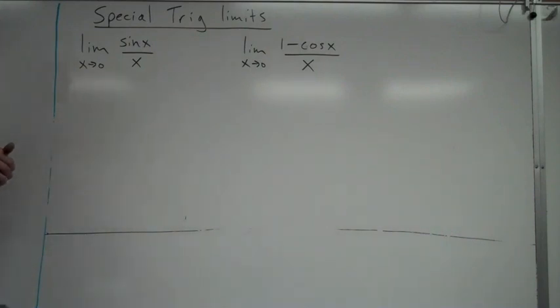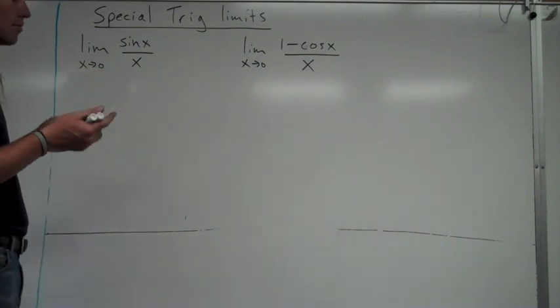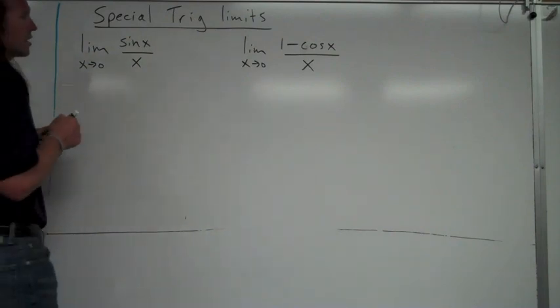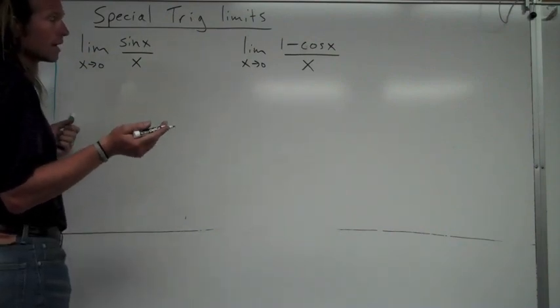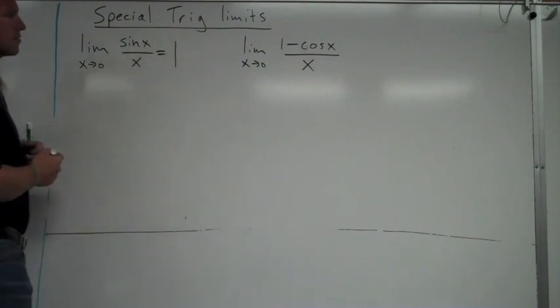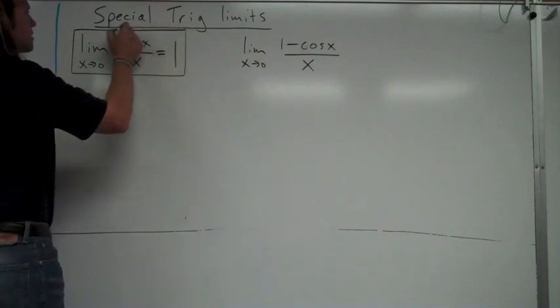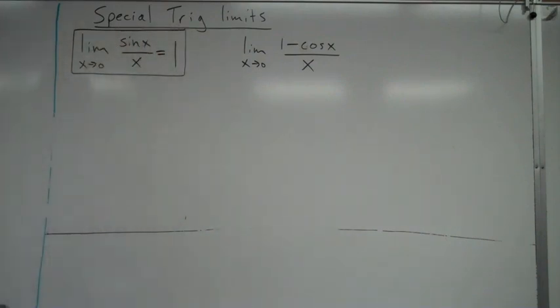And you can see what's going on here. And you can see that if you look at the graph, as x approaches zero, the y value is approaching one. So there actually is a hole in the graph there at x equals zero because you can't divide by zero, but you can tell that the limit is equal to one. So this right here is something that you are expected to commit to memory. The AP peoples assume you know this, okay?